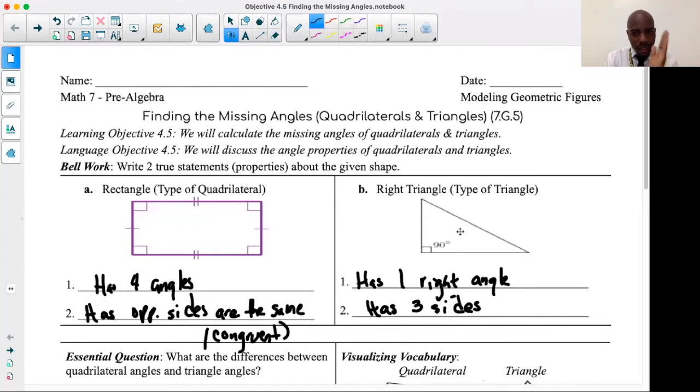So ladies and gentlemen, let me just make sure we're all still at the same screen. What you have been done when you looked at the rectangle—look at the right triangle—you were able to identify the rectangle has four angles, opposite sides of the same. Right triangle has at least one right angle and three sides. I do want to point out, however, because today's lesson is focusing on finding missing angles, I do want to talk about these angle measurements.